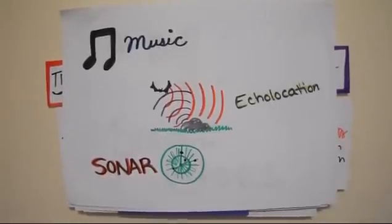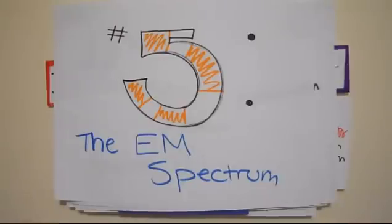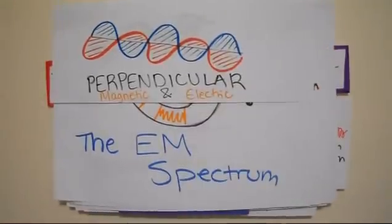Part 5, The EM Spectrum. The waves of the electromagnetic spectrum are electrically charged particles acting as a wave, creating a magnetic and electric field vibrating at right angles to each other. They are not mechanical waves, so they don't need a medium and can travel through empty space.